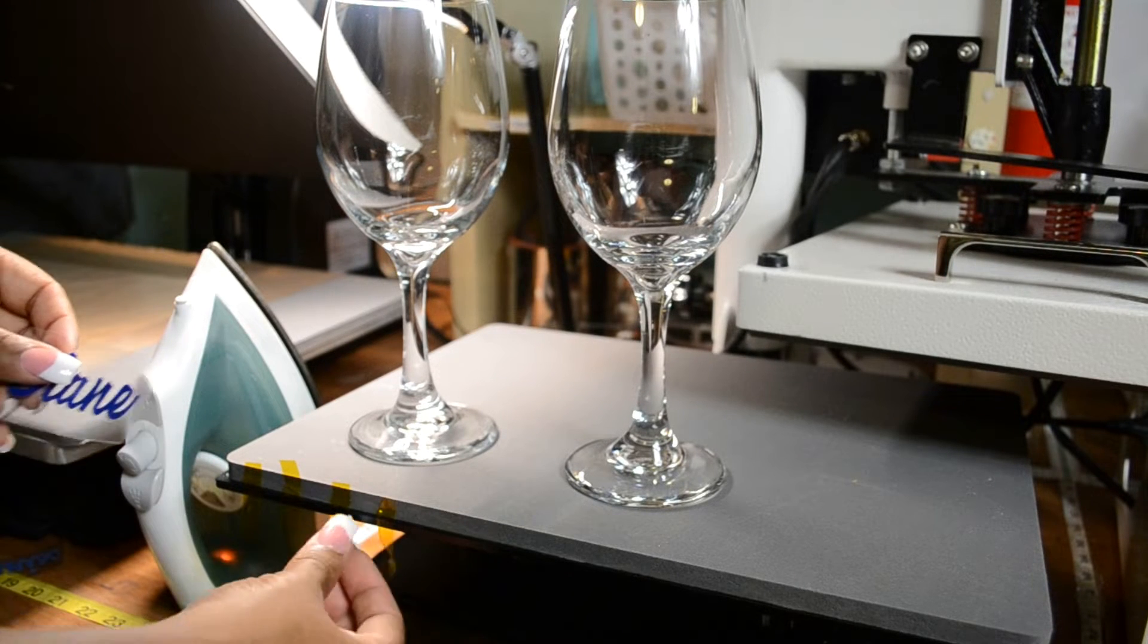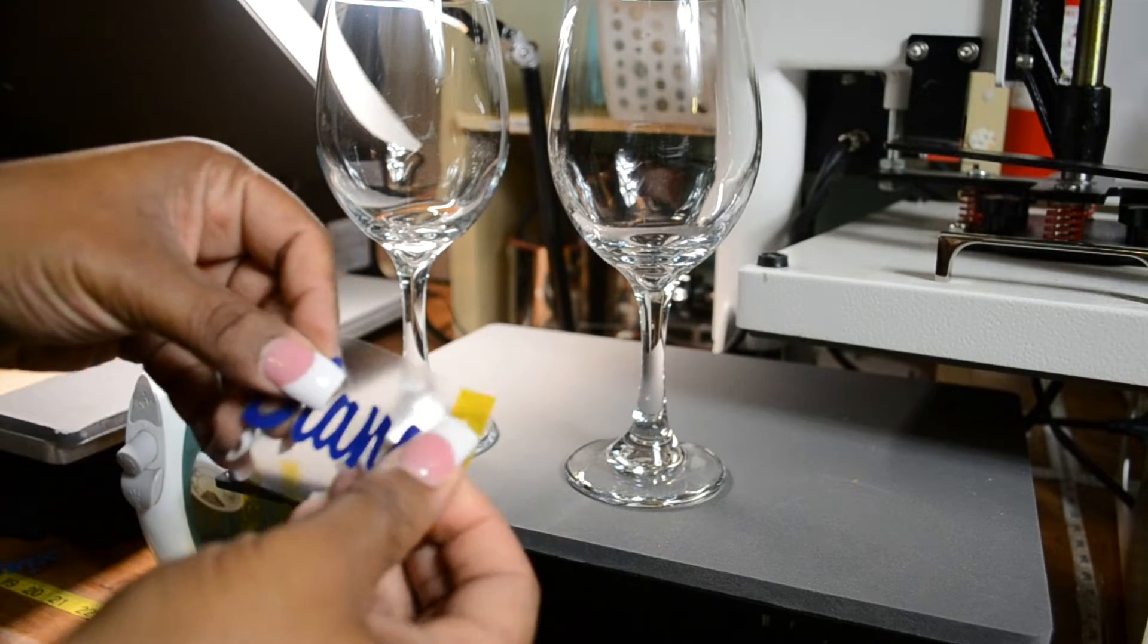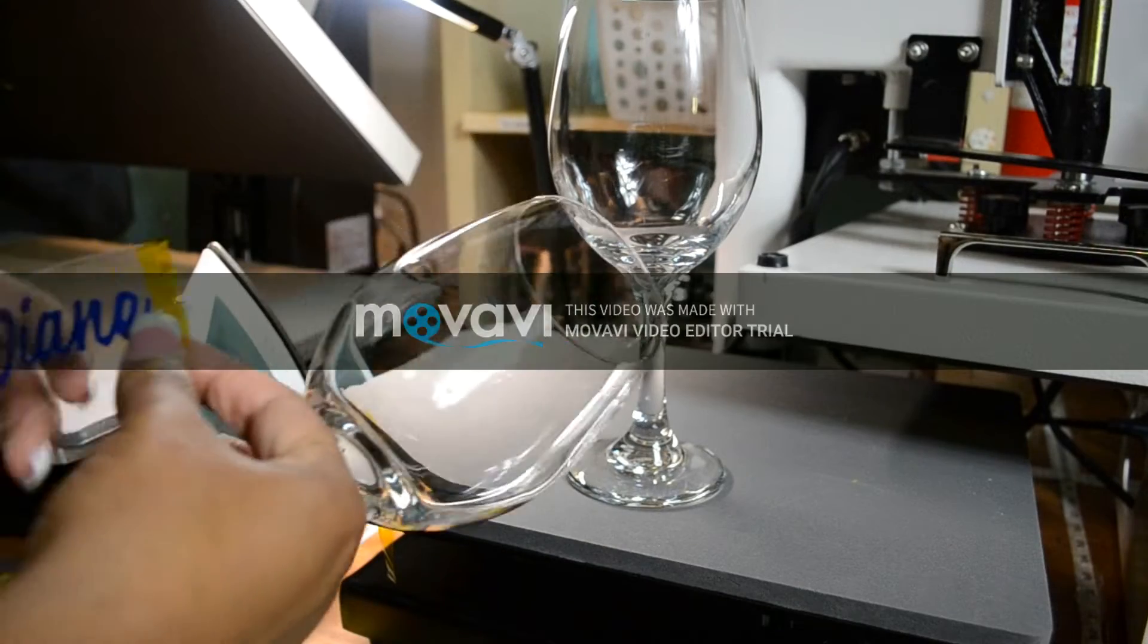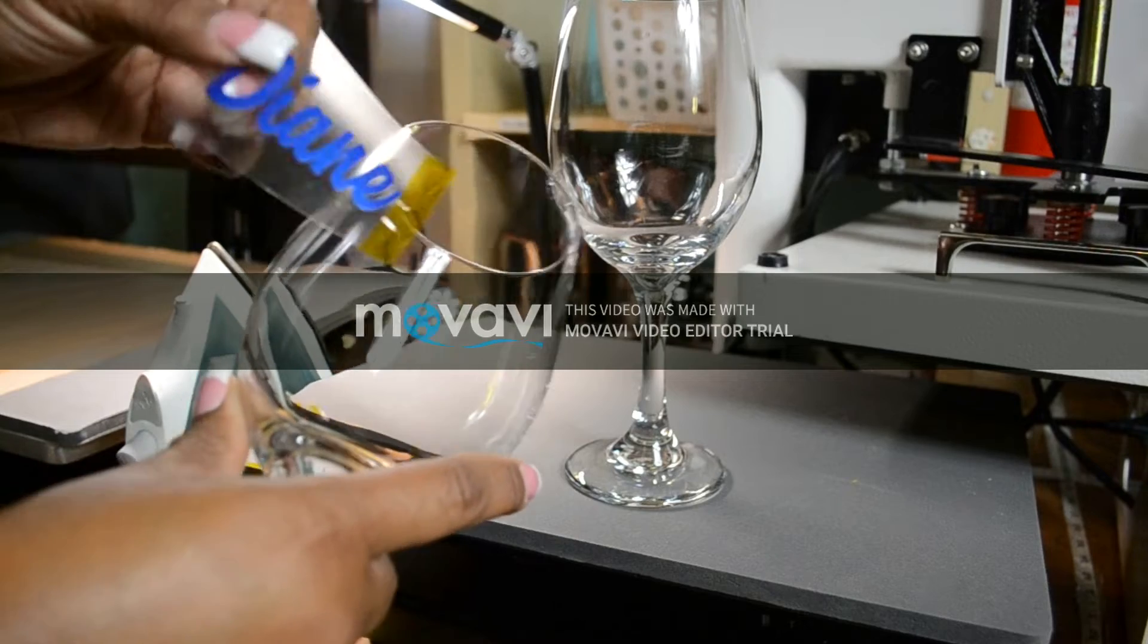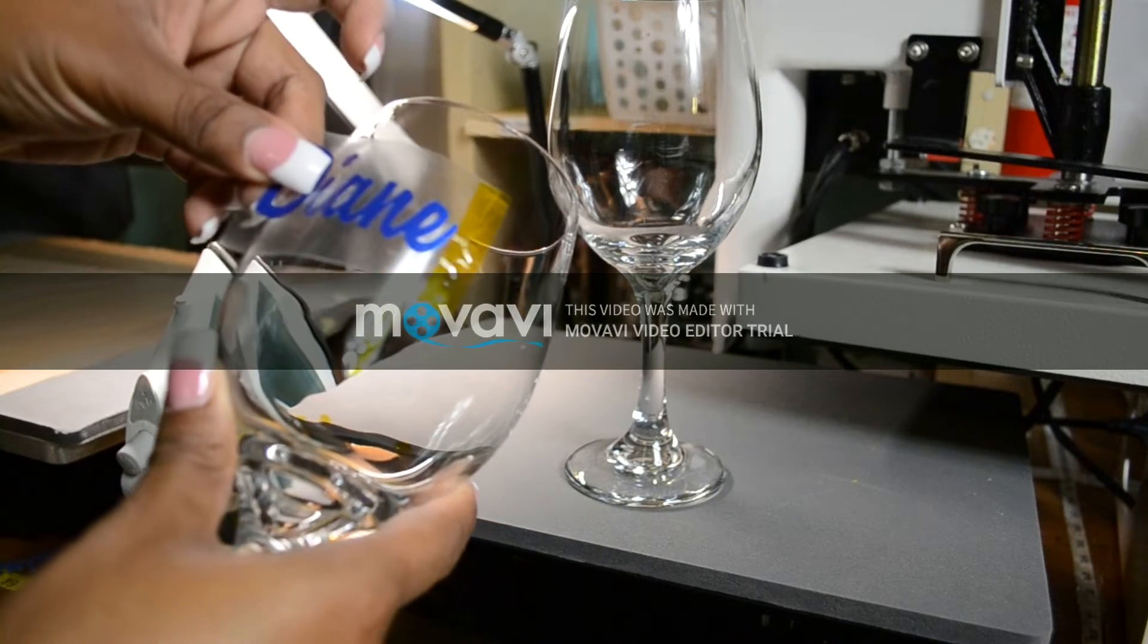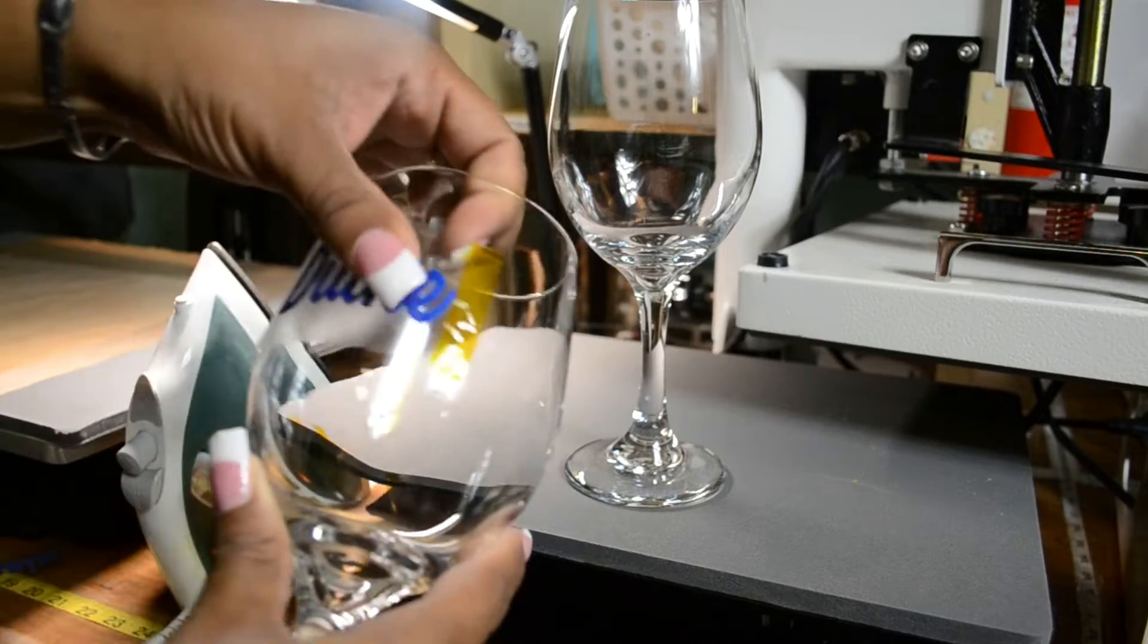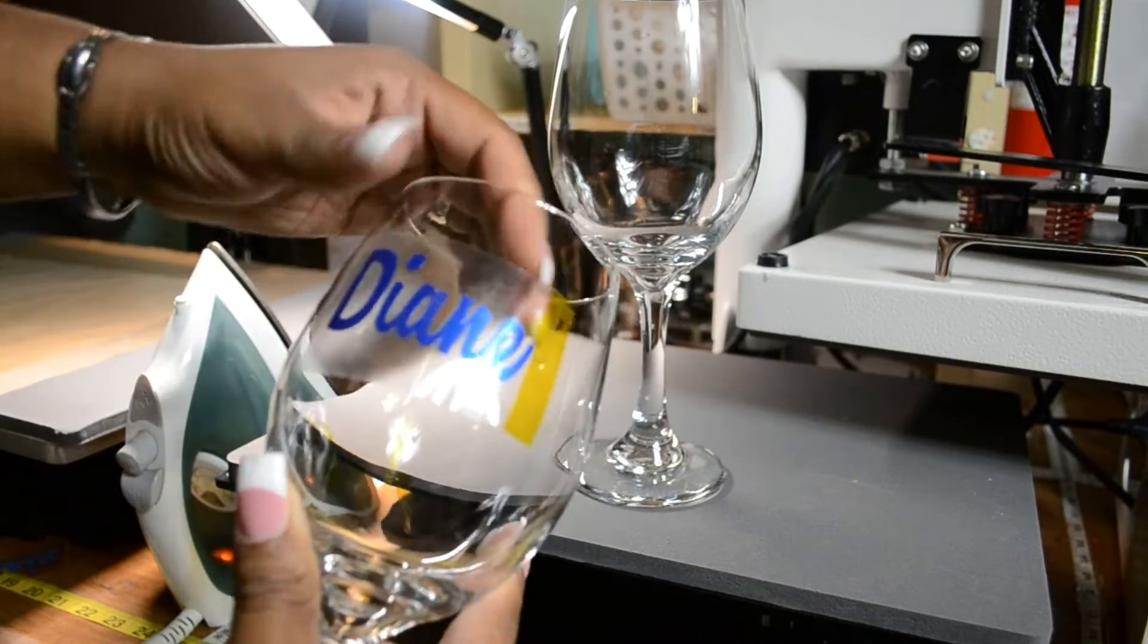And I am going to put heat transfer tape on one end right here. And then I am just going to use a glass. Now for these glasses, to clean these glasses, I just used a standard soap and water dish detergent. Alright, and so I didn't use any kind of denatured alcohol or rubbing alcohol or Windex or anything like that.